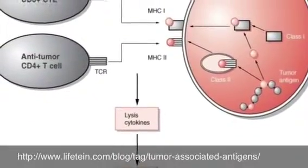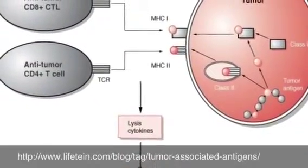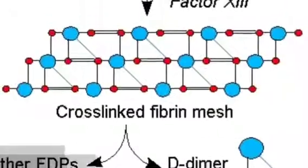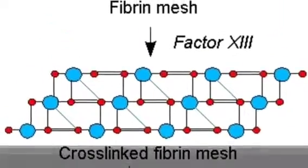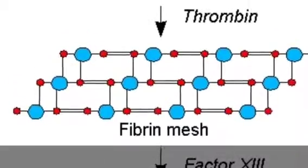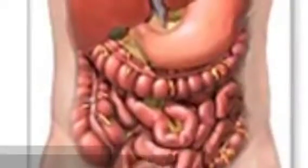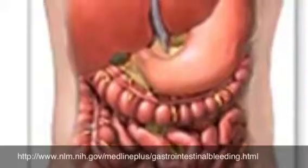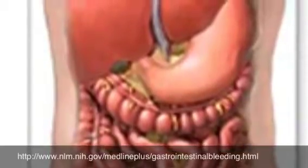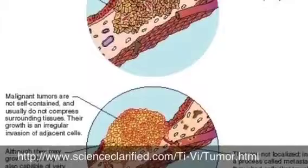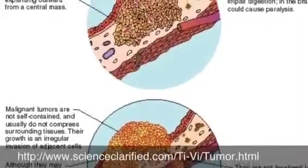Tumor antigens are viruses that can cause tumors. Dimers are molecules consisting of two identical simpler molecules. Gastrointestinal is relating to the stomach and intestines. A malignant tumor is the cancerous abnormal growth of body tissue.